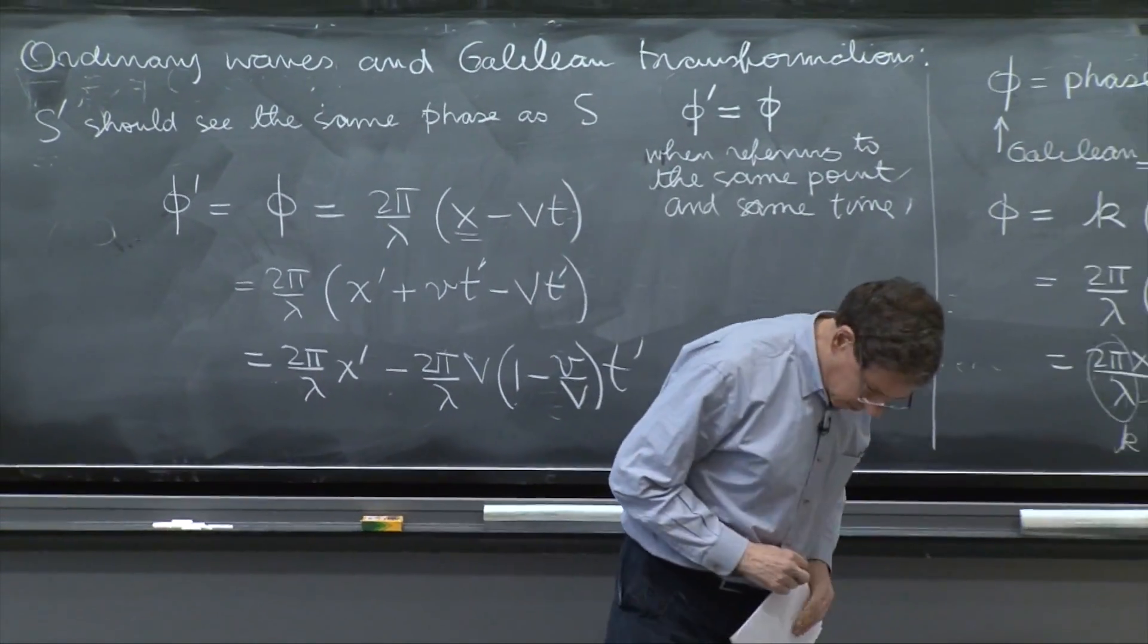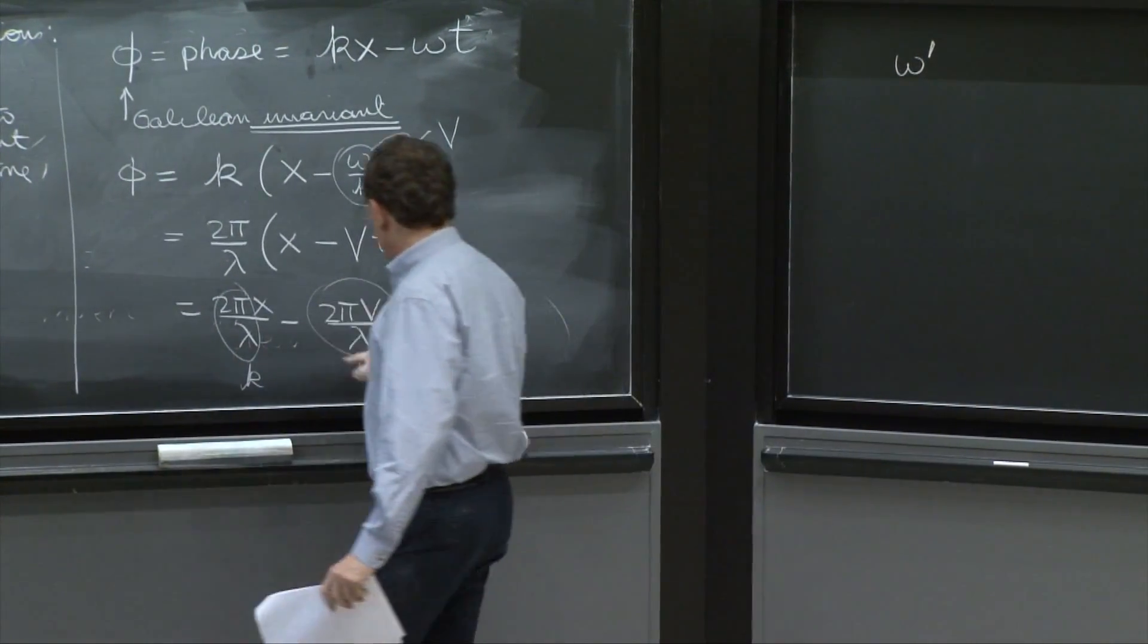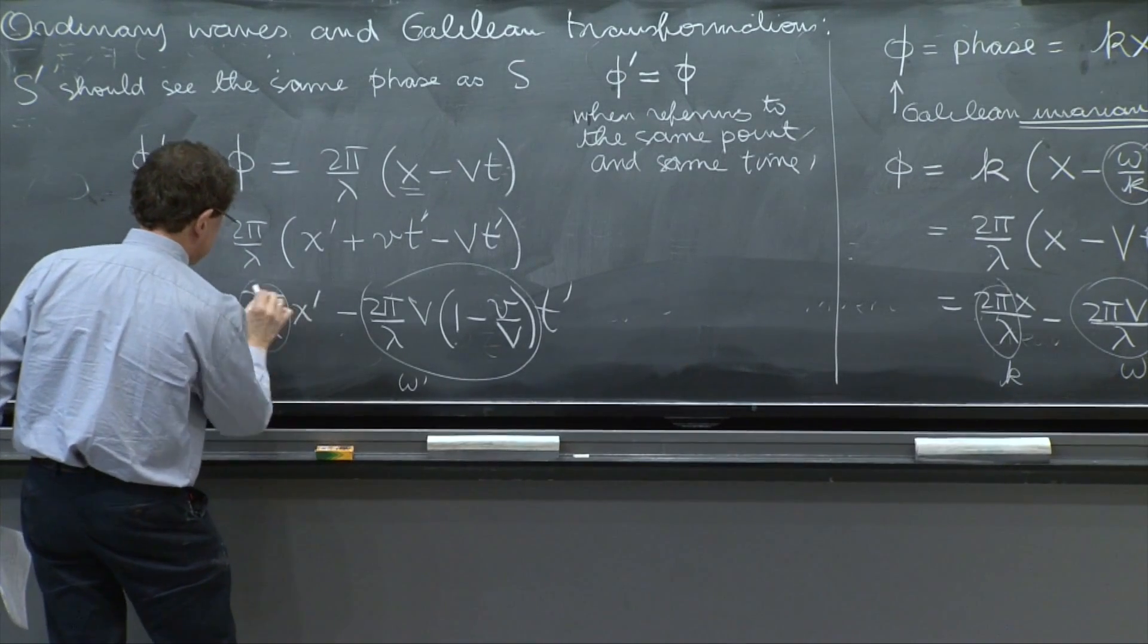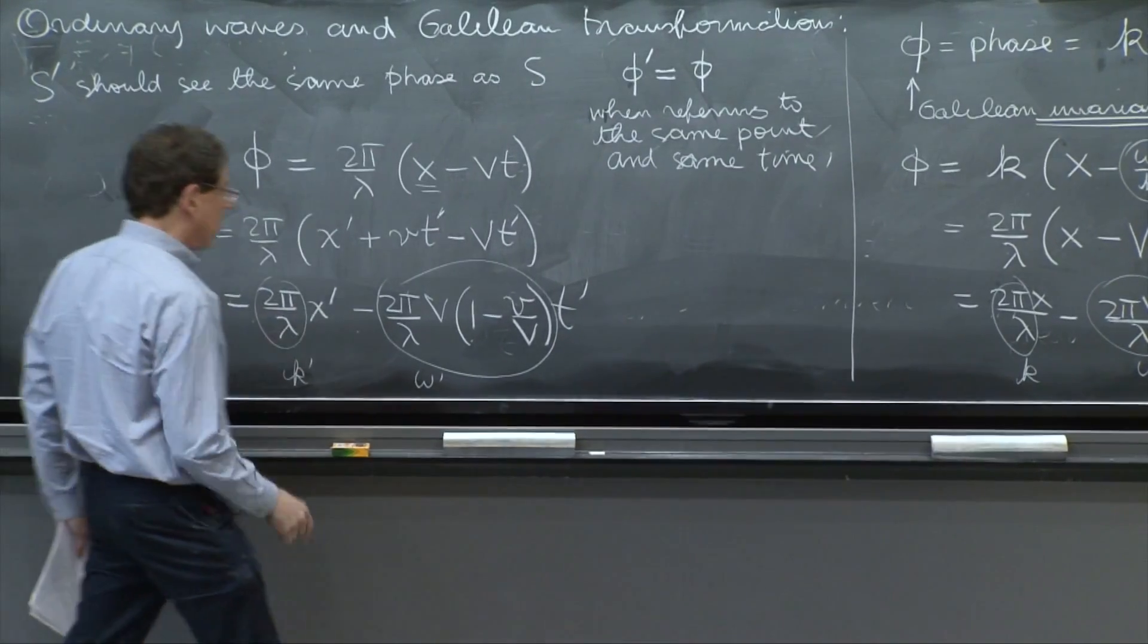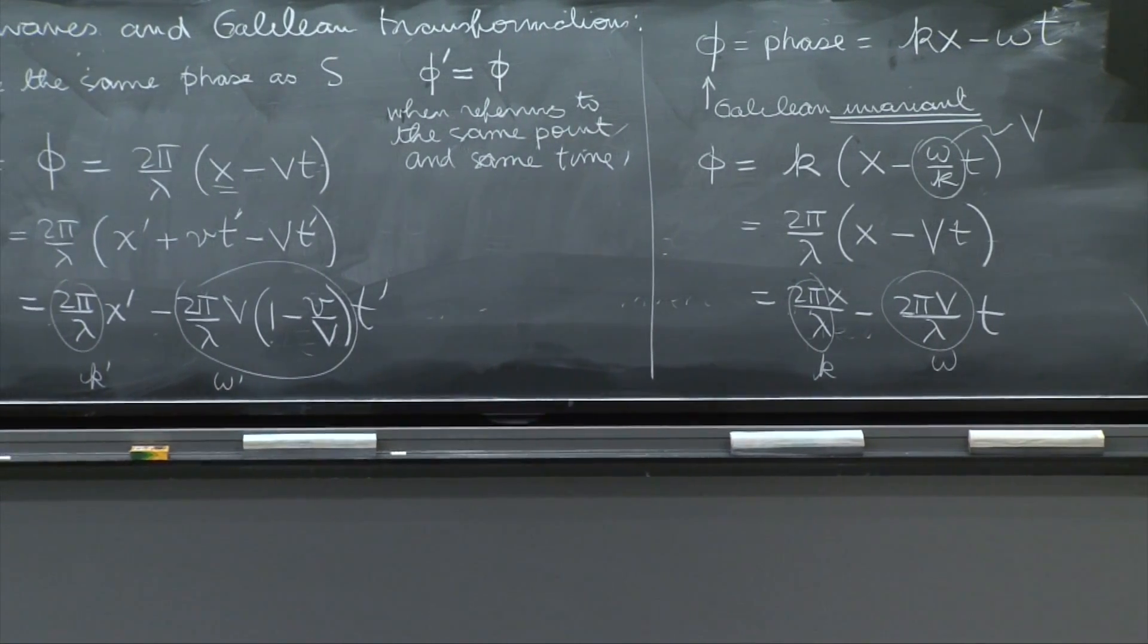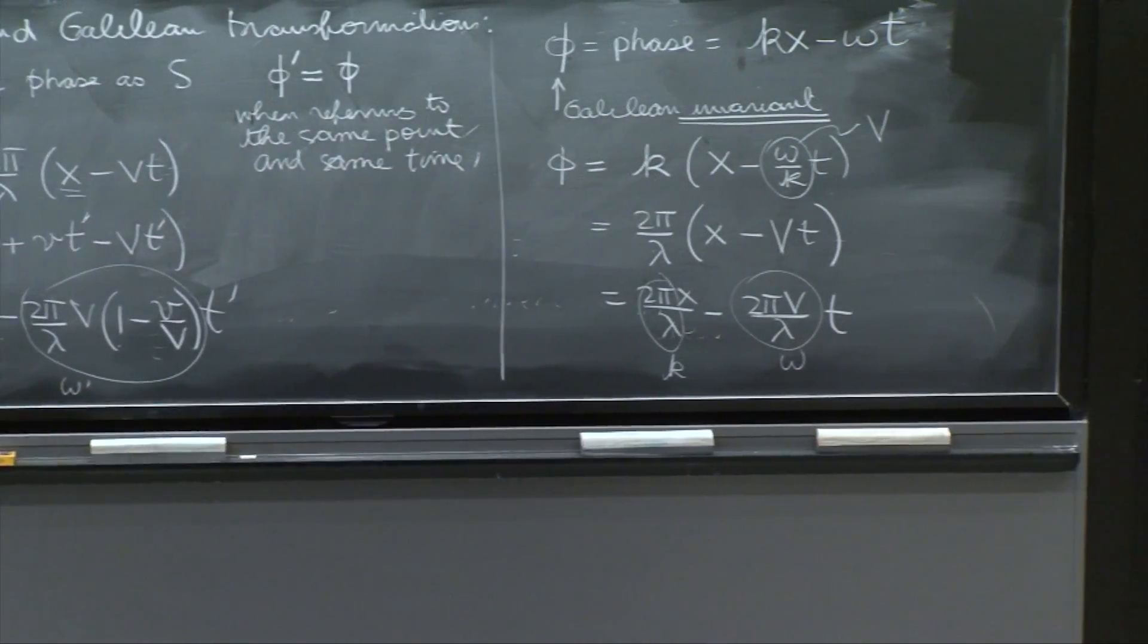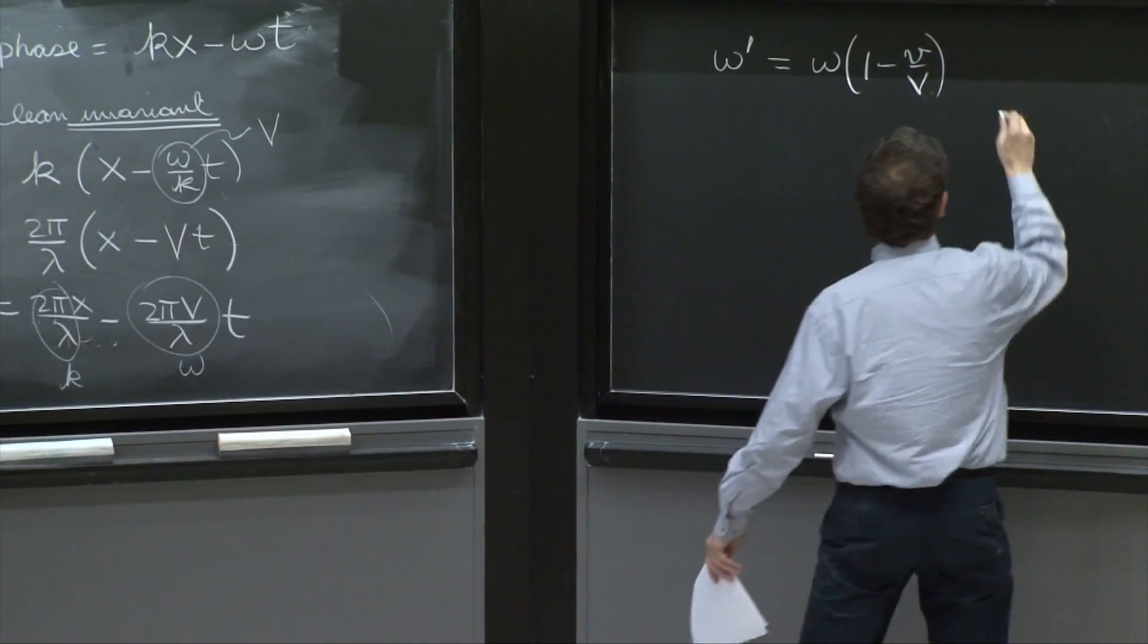And read, therefore, that omega prime, this whole quantity, is this omega prime. And this is k prime, because they correspond to the frame S prime. So omega prime is equal to this 2 pi v over lambda, which is omega, times 1 minus v over V.